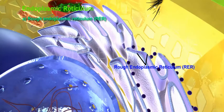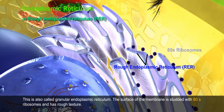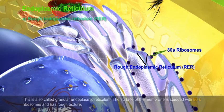A. Rough Endoplasmic Reticulum (RER). This is also called granular endoplasmic reticulum. The surface of the membrane is studded with ribosomes and has a rough texture.